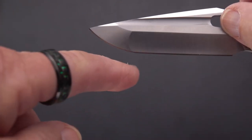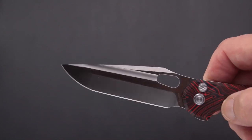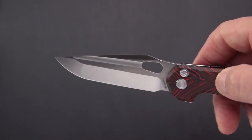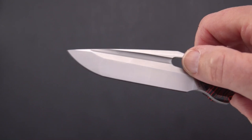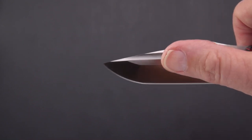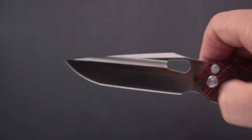Again, they were able to accomplish the compound grind without that defined tanto point, kind of like what you see on some of the Chavez designs made by Reate. They make a pronounced tanto one and they make one that they call a drop point.